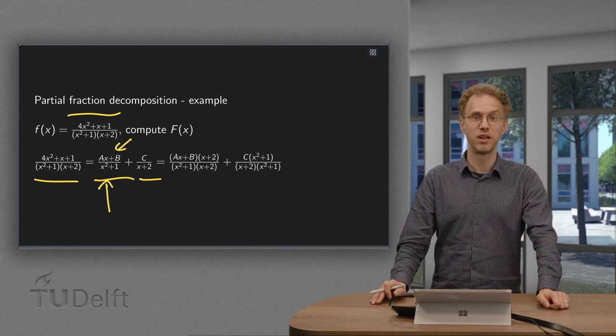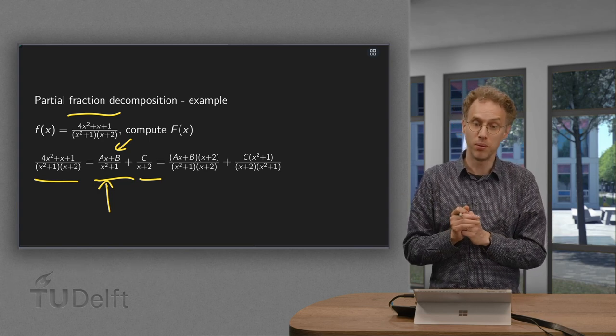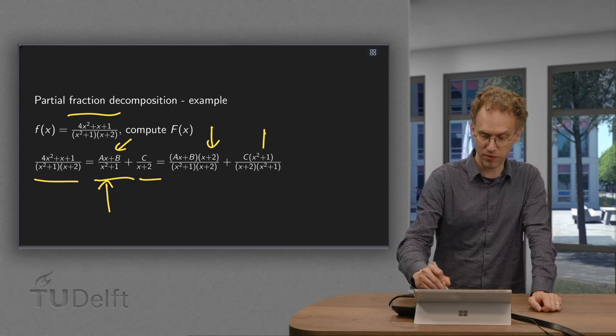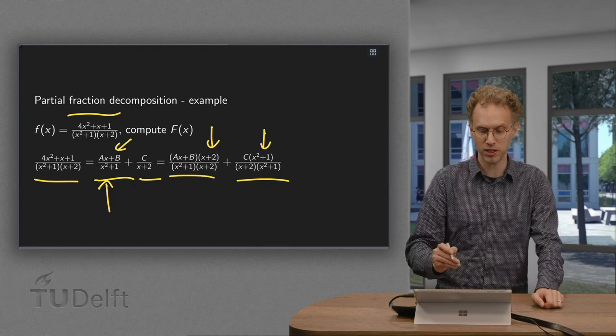So how do we do this? Again we have to make sure that we can add them so the denominators have to be the same. So we multiply with 1 in order to make sure the denominators become the same.